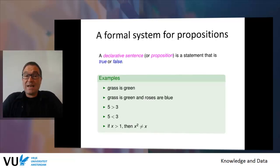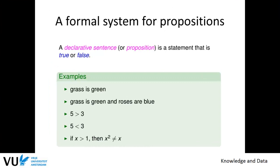Propositional logic is a formal system to allow you to talk about propositions. A proposition is a declarative sentence — a statement that can be either true or false. So 'grass is green' can be true or false. We can combine these statements into more complex ones, such as 'grass is green and roses are blue,' or '5 is bigger than 3 or 5 is smaller than 3.' These are two propositions that can each be true or false.